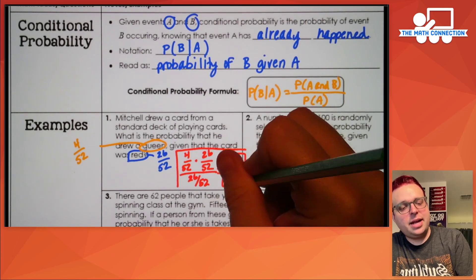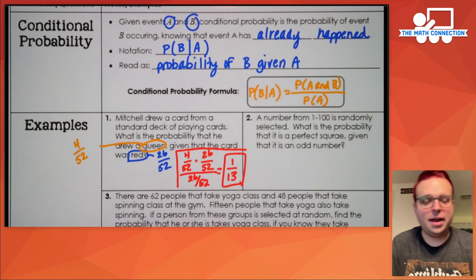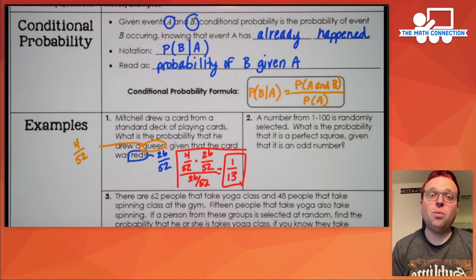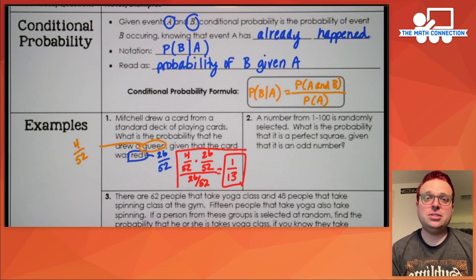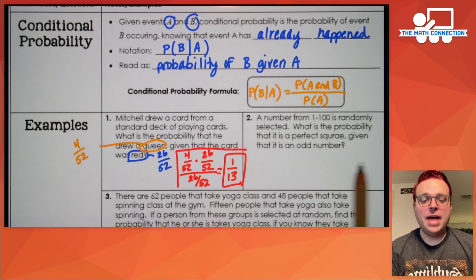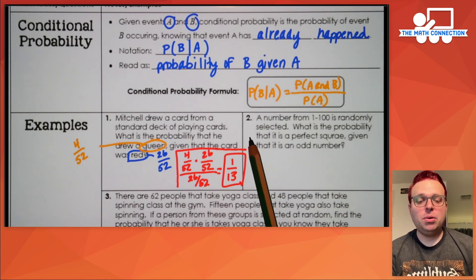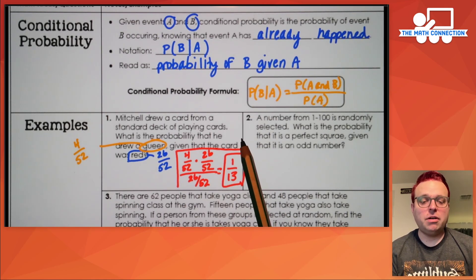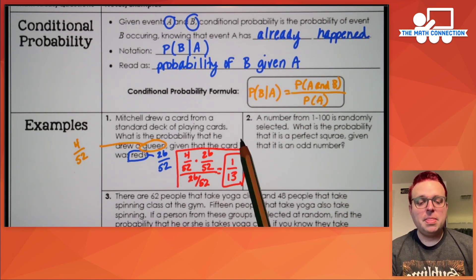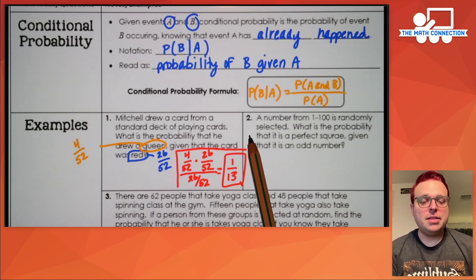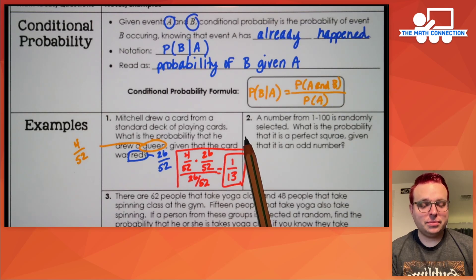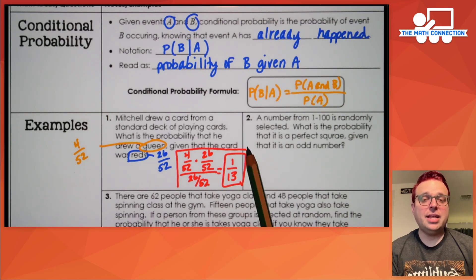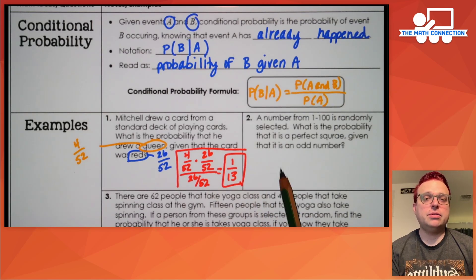So the answer here is one in 13. The way you translate this answer is: I have a one in 13 chance that when I pull a card from a deck, it will be a queen given that it's a red card.